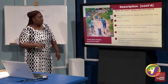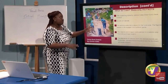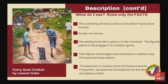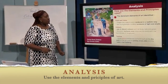So here are some points for description applied to this work. This is a painting done by Lennox Coke titled "Curry Gold Cricket." It was done with acrylic on canvas — that's the medium. The setting looks like a place in the rural area; the figures seem to be engaged in an outdoor activity. The objects and images were painted in a realistic way — the style portrays realism. The elements of color, form, and texture stand out; proportion, perspective, and balance are the dominant principles evident.